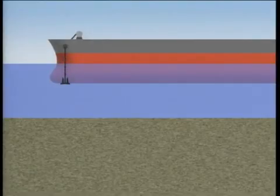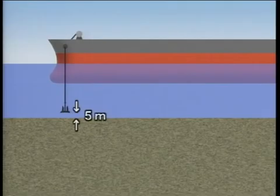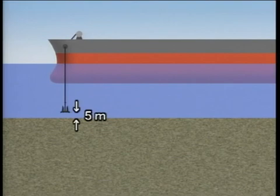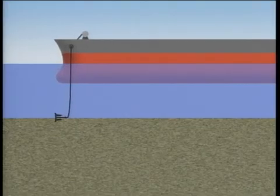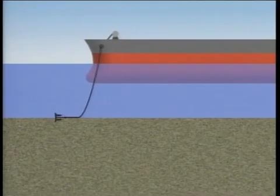To avoid this hazard, the anchor is lowered by walking back into the water until it reaches about 5 metres above the bottom. Then the brake is released to let go the anchor, while applying the brake to adjust the running out speed of the cable and carefully maintaining proper sternway.